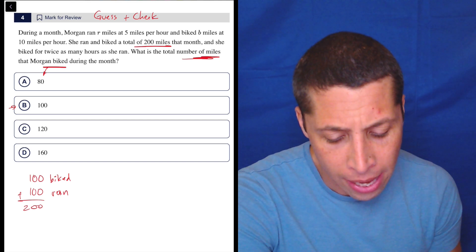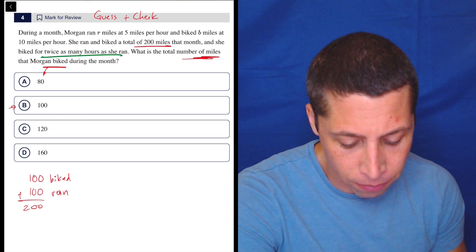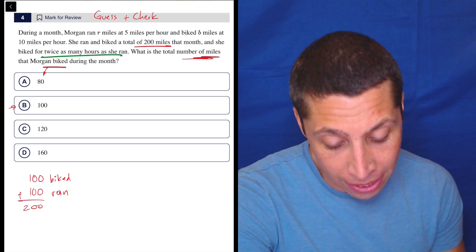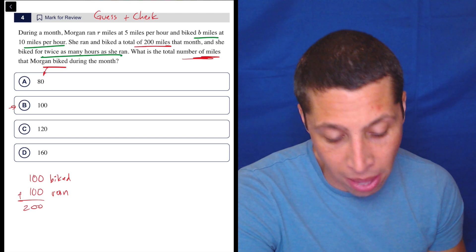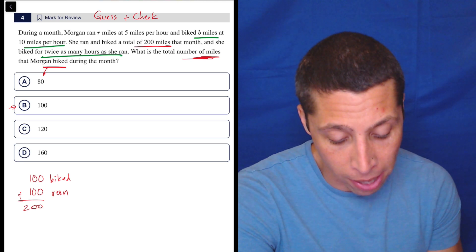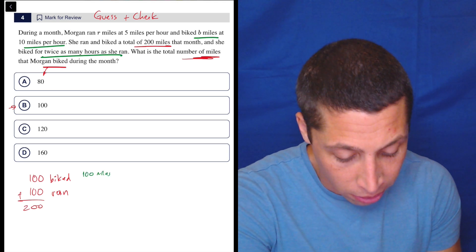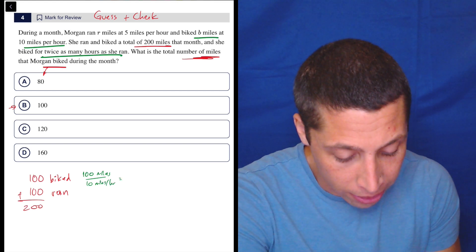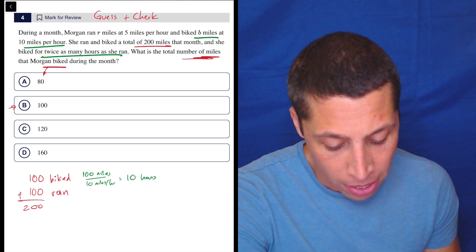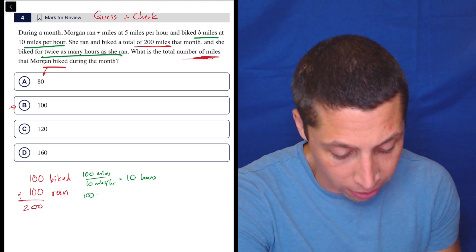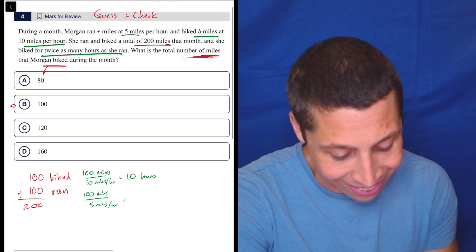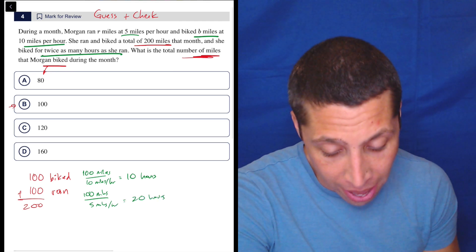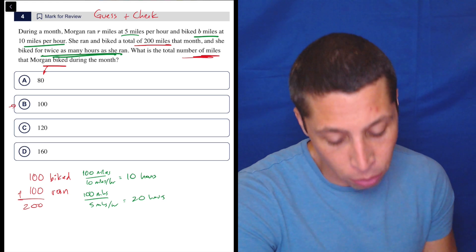Now, the other instruction that we have to follow here has something to do with the number of hours. So how am I going to find how many hours? Well, if she's biking for B miles at 10 miles an hour, B is now 100. So 100 miles of biking at 10 miles per hour - 100 miles divided by 10 miles per hour is going to be 10 hours of biking. And now I can do the same thing for the running. That's 100 miles divided by five miles per hour. So that's going to be 20 hours.